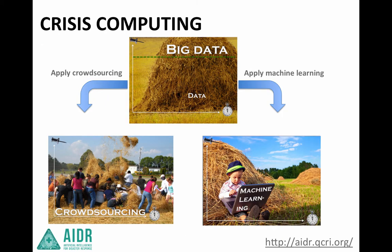How ADER works: it falls under the category of crisis computing, and it combines human intelligence and machine intelligence to attain results that neither could do alone. A lot of data is produced in times of mass emergency, and it's too much for people to be able to digest on their own, and it's too complex for machines to process on their own. So we need to combine the two to attain the best results.